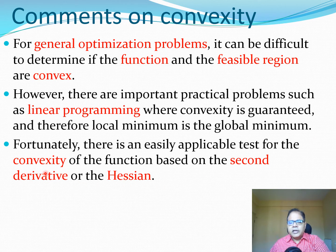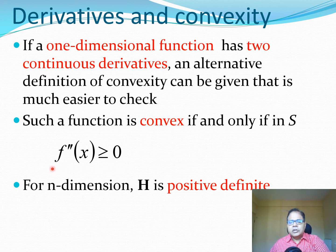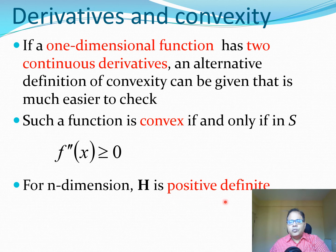There are some easy tests for convexity of a function based on the second derivative or Hessian matrix. For a one-dimensional function with two continuous derivatives, you can check for convexity by showing that f''(x) is greater than or equal to 0. The bowl-shaped curve we drew before clearly had the property that the second derivative within the convex set is greater than 0. For example, if we take the simple function x², the second derivative is 2, which confirms that function is convex.